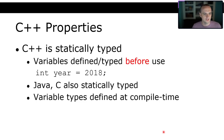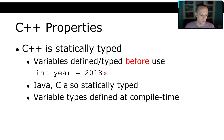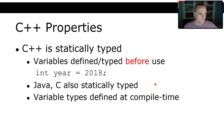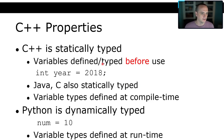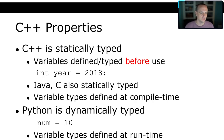C++ is statically typed — variables are defined and typed before they're used. For example, to store a number I'd say 'int year = 2018'. Java and C are also statically typed; variable types are defined at compile time. Once you have an int, it can't be anything else later on. Python and JavaScript are dynamically typed — you can say 'num = 10' and later assign a string or object to it. In Python, variable types are defined at runtime. That's a big difference between C++ and Python.